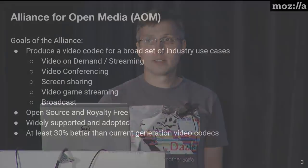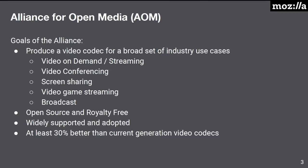To address that, the Alliance for Open Media was formed with the goal of creating a video codec suitable for a broad set of industry use cases: video on demand and streaming, internet use cases, video conferencing, screen sharing, video game streaming, and broadcast. The goal was also for it to be open-source and royalty-free, to have wide adoption and be broadly supported, and to be 30% better than the current generation of video codecs — VP9 and HEVC.